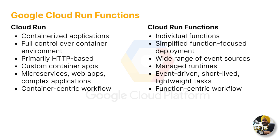Cloud Run also supports batch processing jobs and scheduled jobs to execute at a specific time. The workflow in Cloud Run is very container-centric, while Cloud Run Functions is code-snippet or function-centric. You version multiple functions, iterate by creating different versions, push them to Cloud Run Functions, and switch between them — whereas with Cloud Run you create tags and switch between multiple tags.